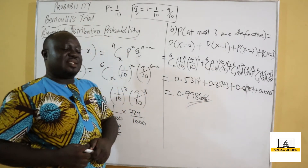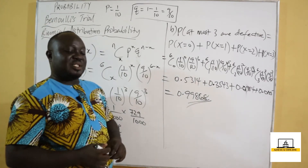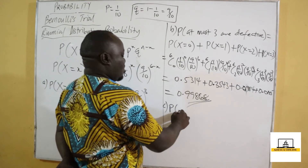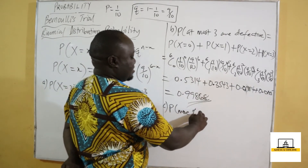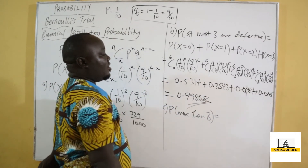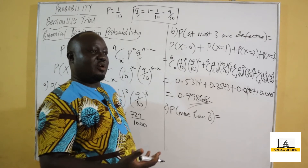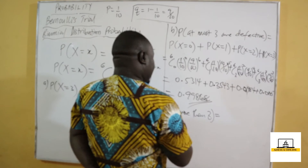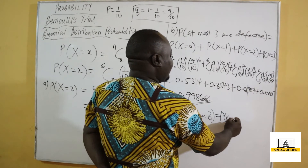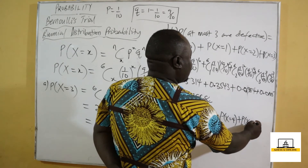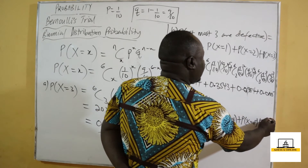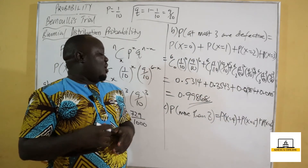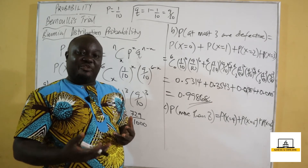Part C says more than three will be defective. More than three means four, five, and six. So we find the probability when x equals four, or x equals five, or x equals six. Those are the three cases for more than three defective parts.